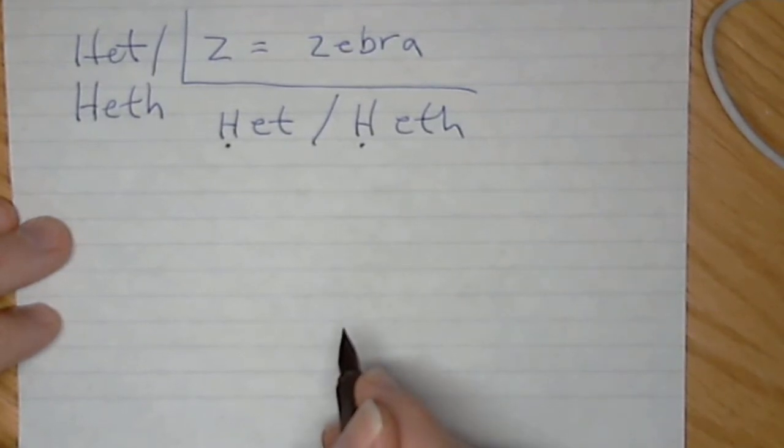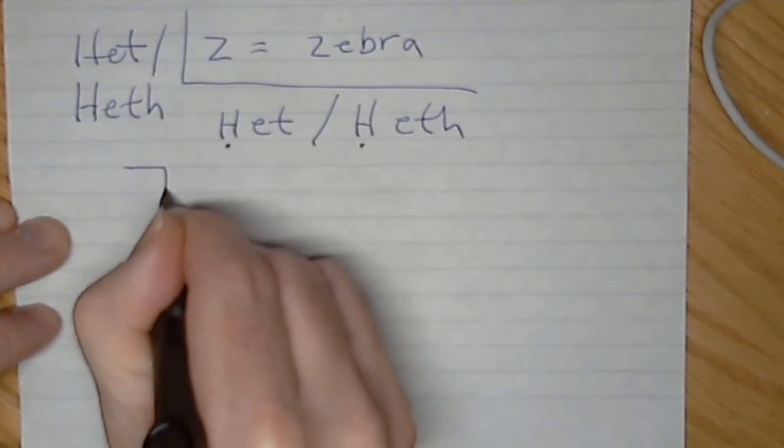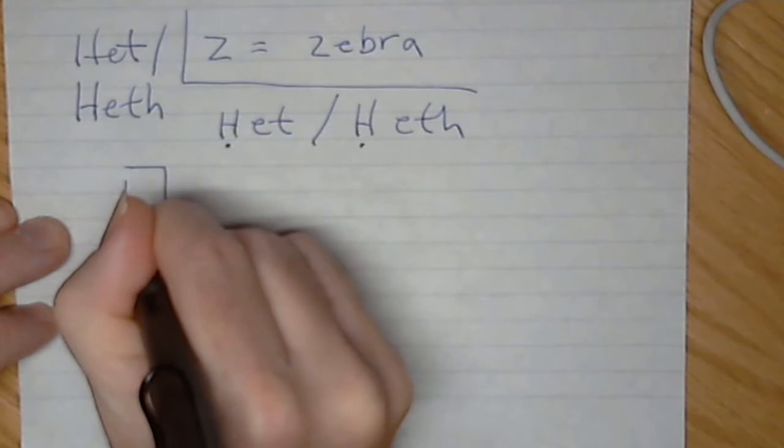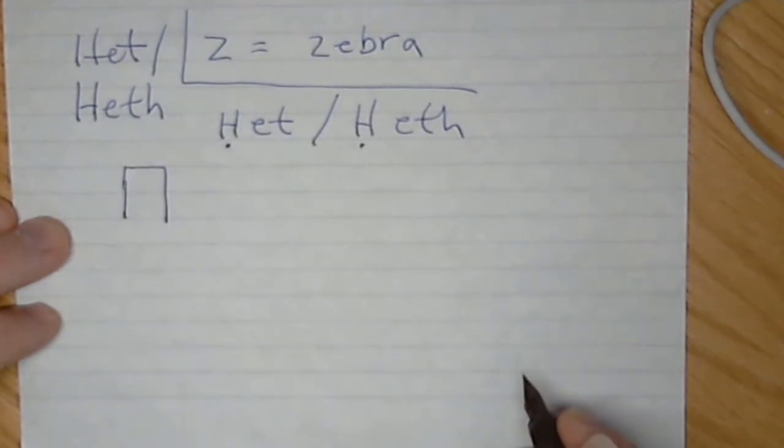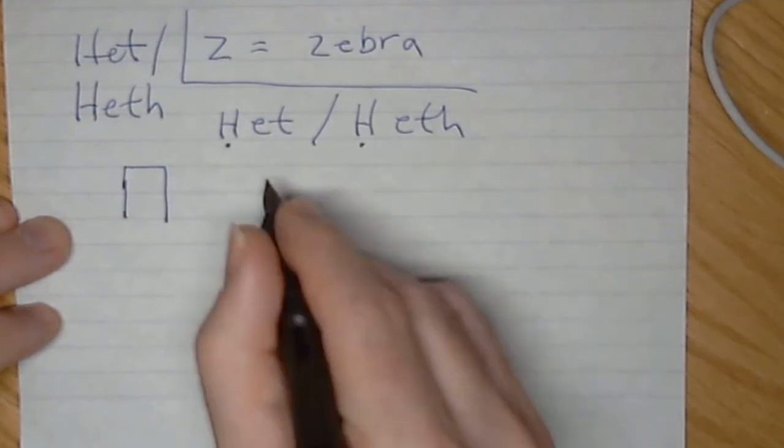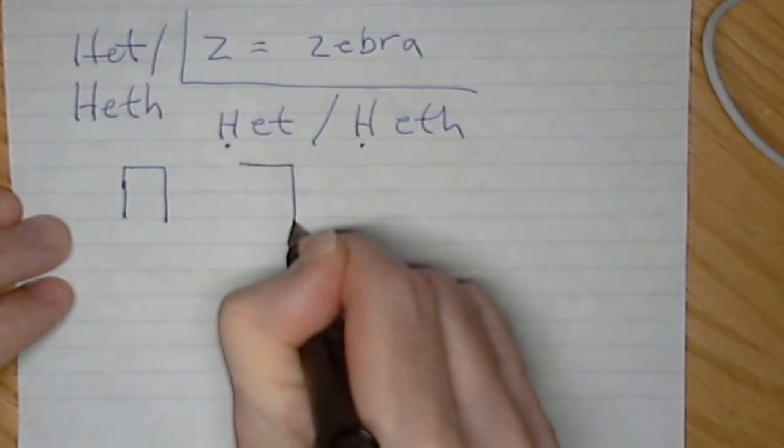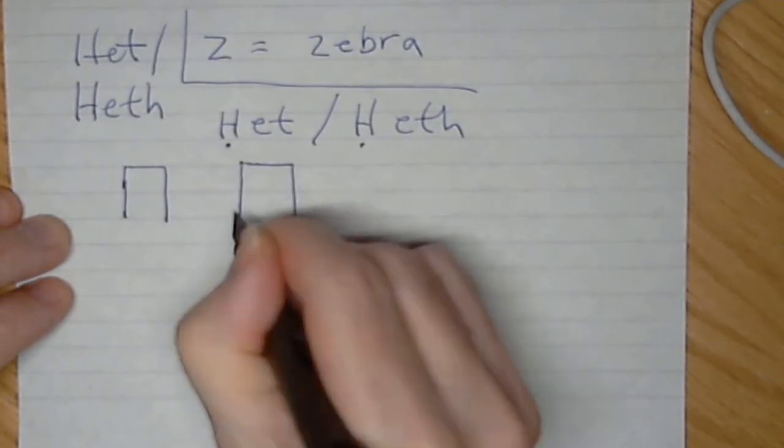And this looks a lot like a HE. Remember our HE, we had that what looked like a Dalet, and then it came up and there was a gap. The HET closes that gap off. So our HE has that Dalet-like looking first part, and then it closes off the left-hand side.